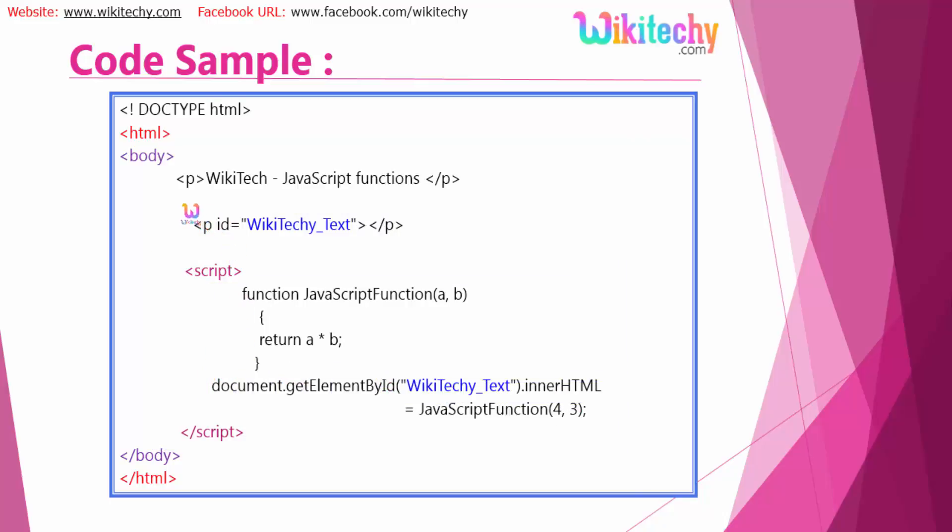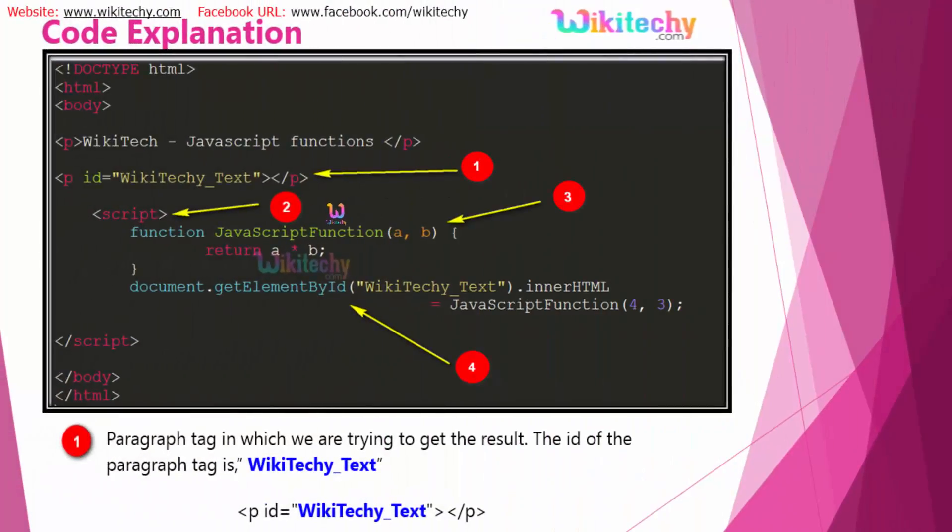So into this WikiTechy_Text, you'll be getting the value as 12. That's how functions work. Here is the colorful piece of coding. You can see the paragraph tag, the script, and the function with two parameters returning data stored in this particular paragraph.